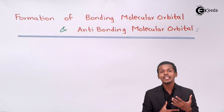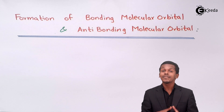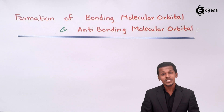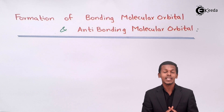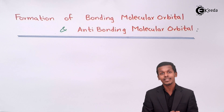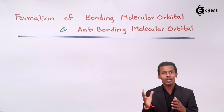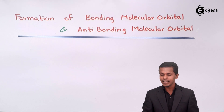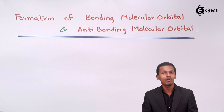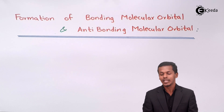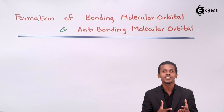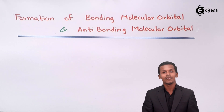But what if they are of opposite phase? If they are of opposite phase, then we could say that they will subtract each other, and that is what produces anti-bonding orbitals. Basically, the formation of bonding molecular orbitals is due to the addition of wave functions, and the formation of anti-bonding orbitals is due to the subtraction of wave functions.